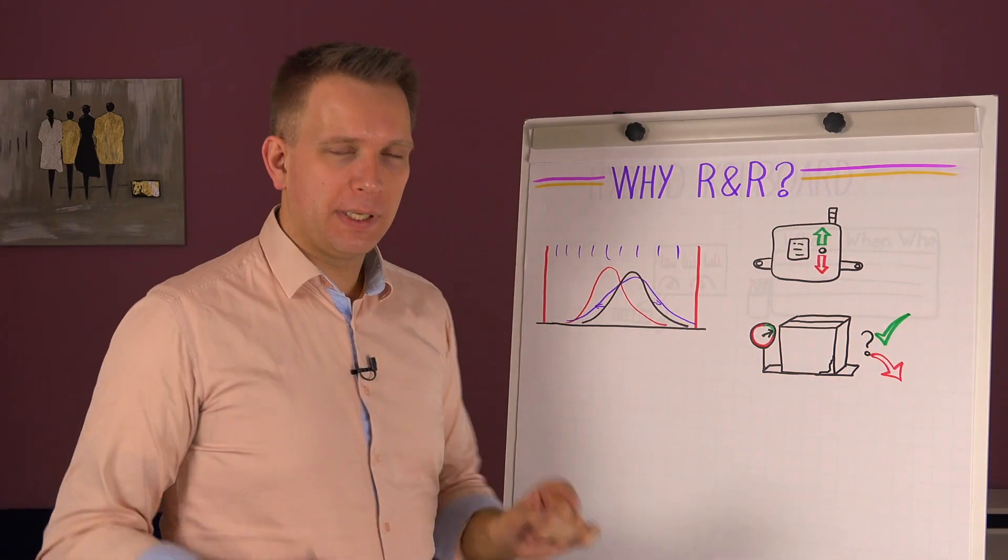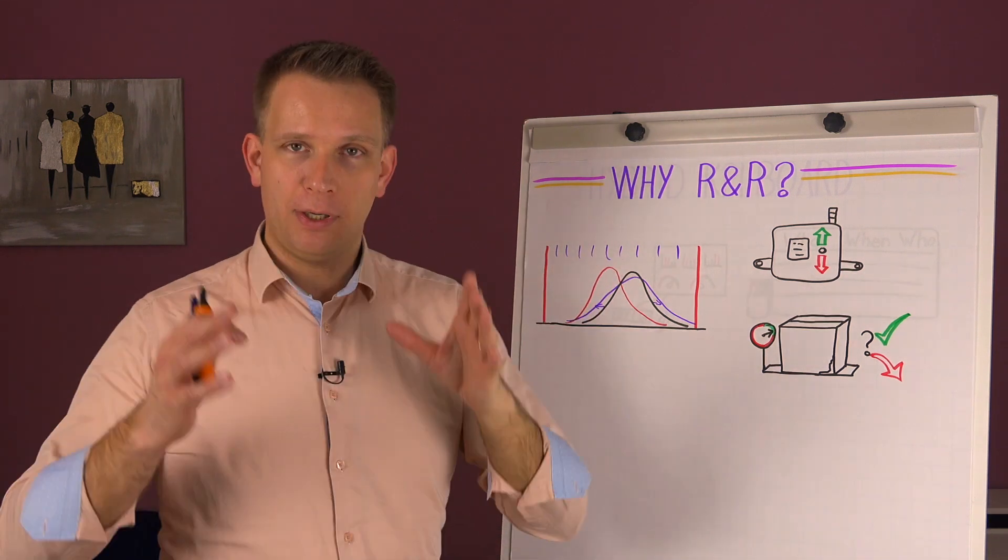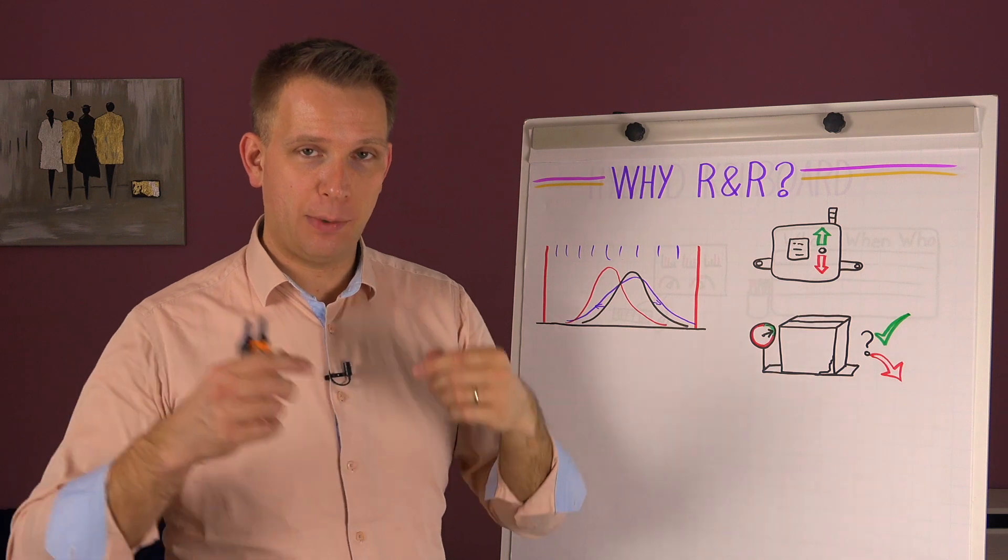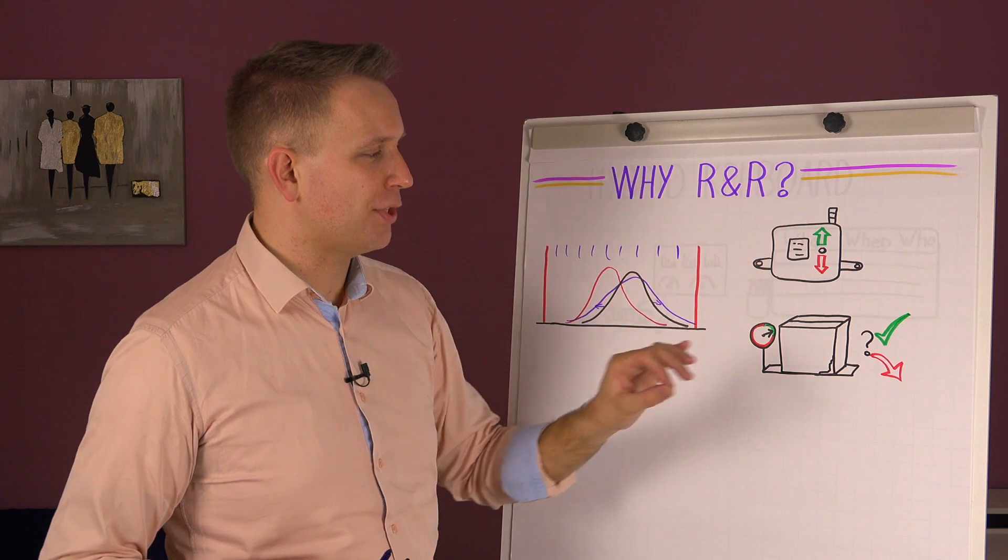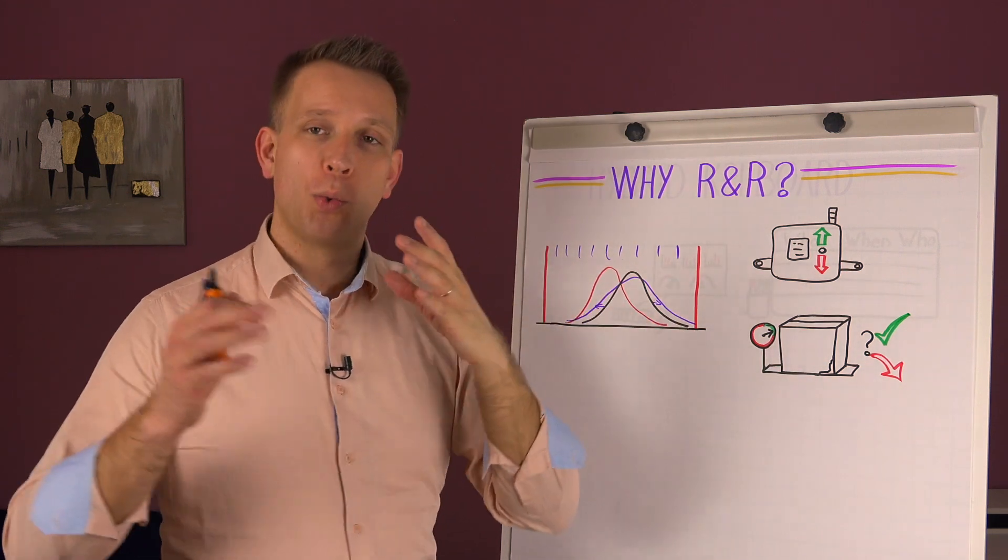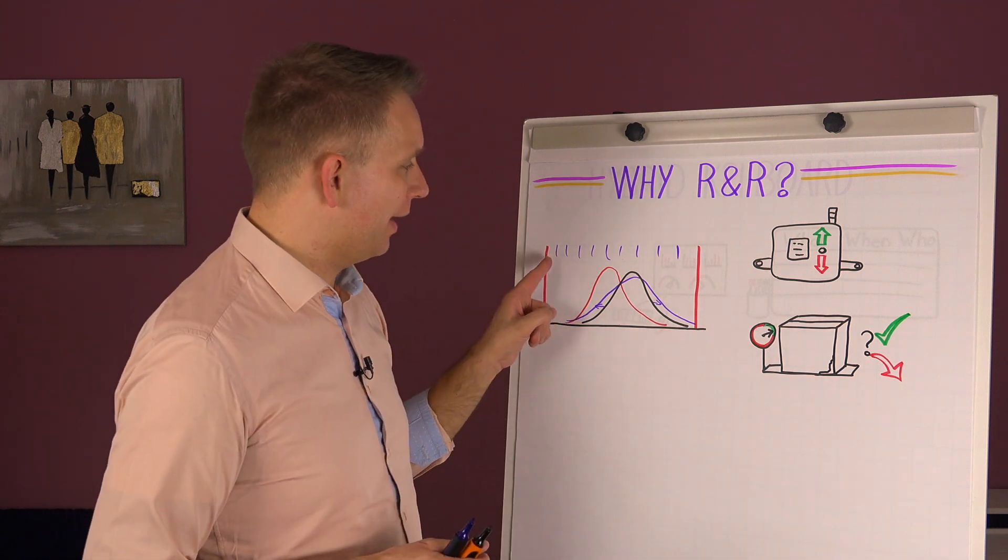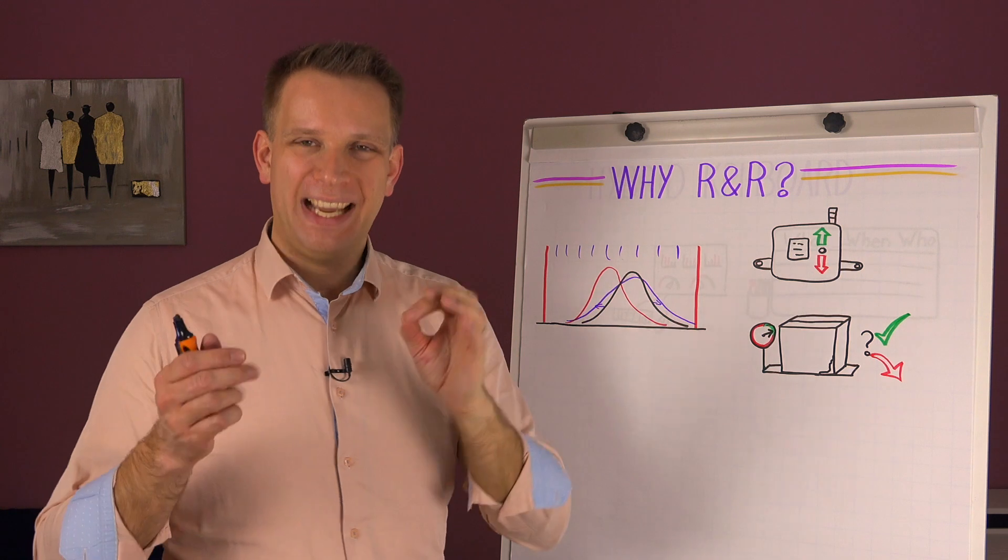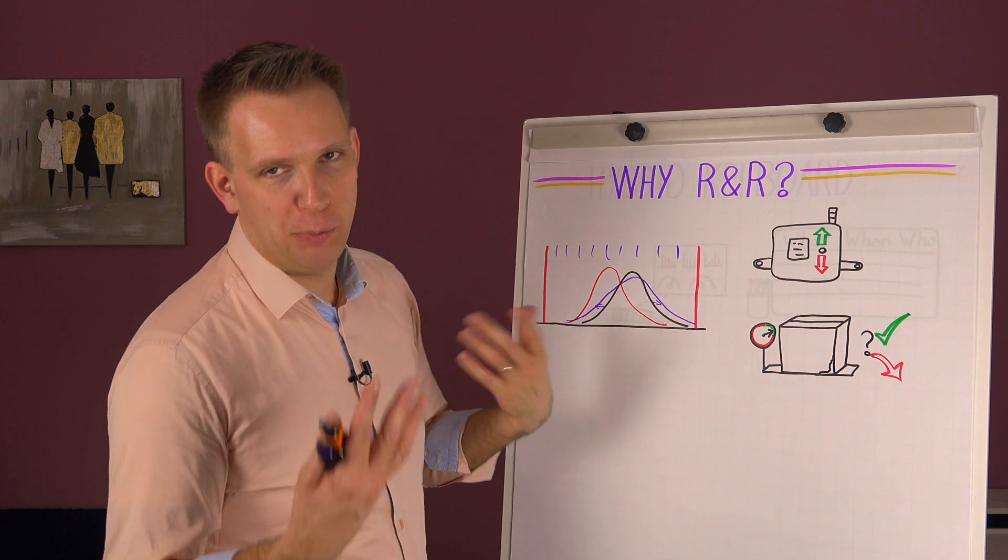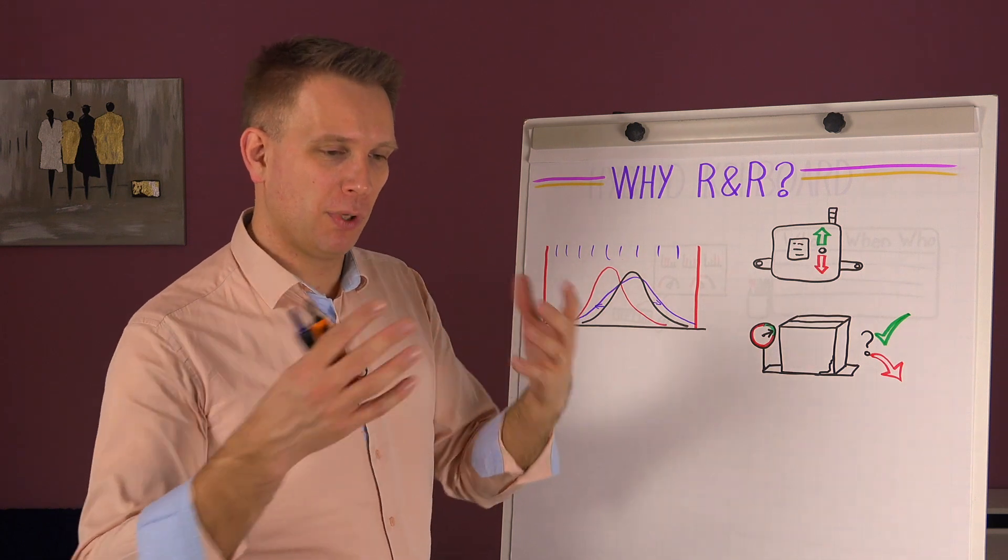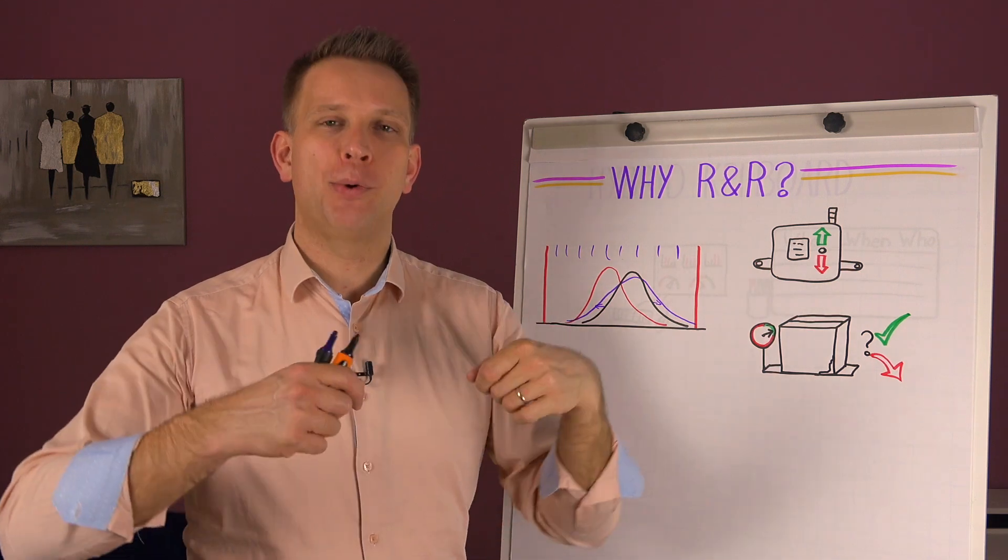Anyway, a lot of detail in there. To rehash, we do the R&R as part of measurement systems analysis, and our measurement system should be good enough to make decisions about the process or the product. We generally consider a measurement system very good when it can distinguish between one-tenth of the range of our specifications, or one-tenth to maybe a little bit more, a fifth or so, of the observed variation coming out of the process.